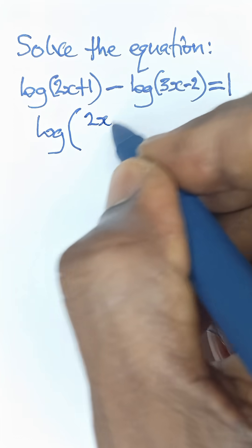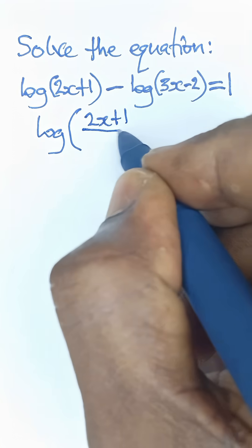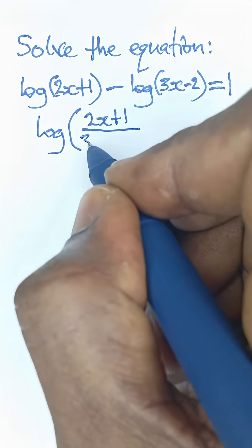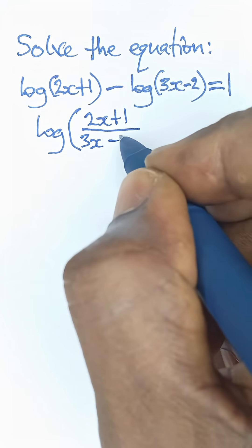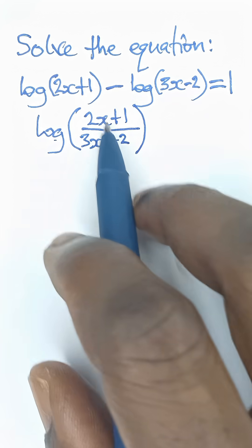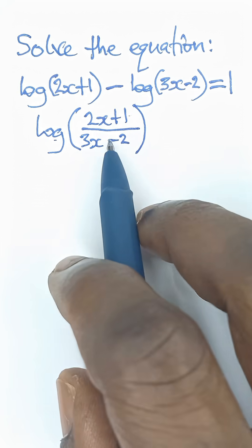So we have 2x plus 1 all divided by 3x minus 2. Anytime you have subtraction in logarithm like this, you just simply take the log and then you divide them.